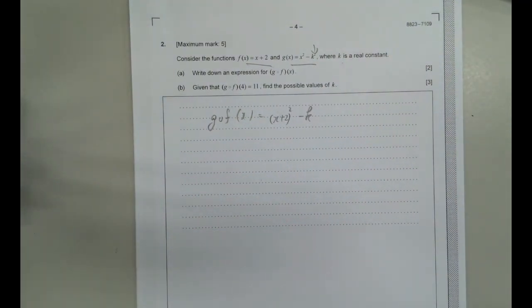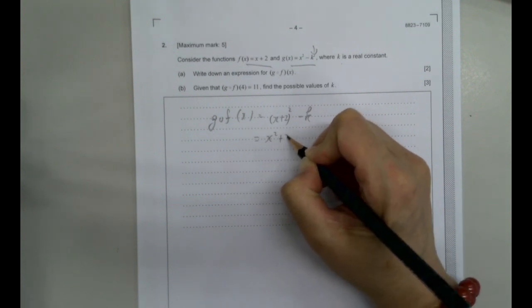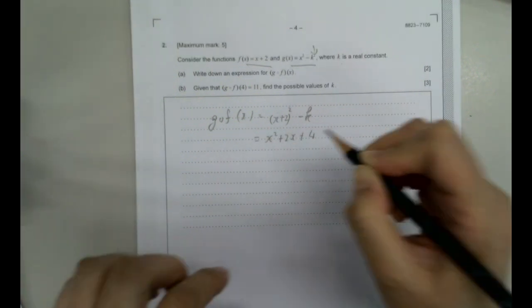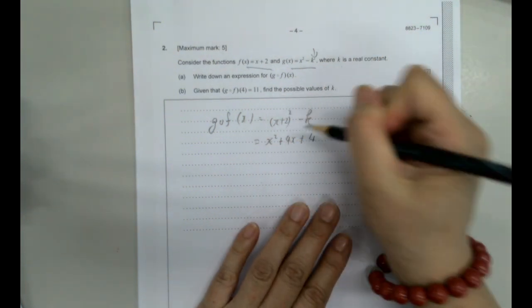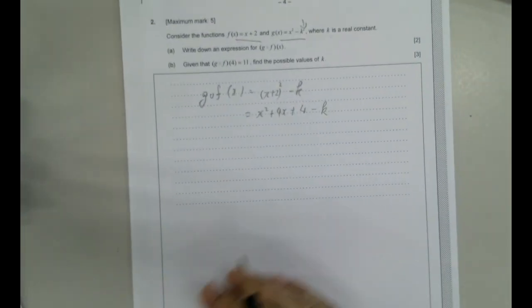And I will simplify that a bit. So I will have x squared plus 2x plus 4x minus k. So this is our answer there.